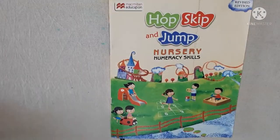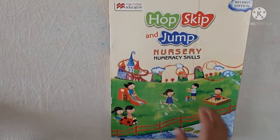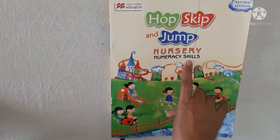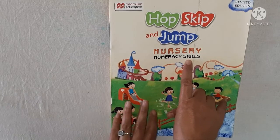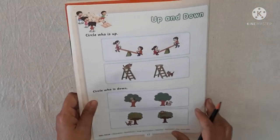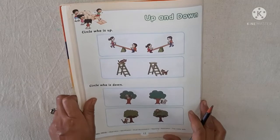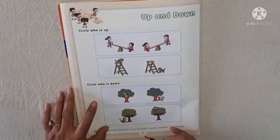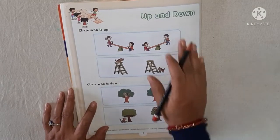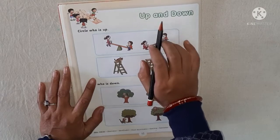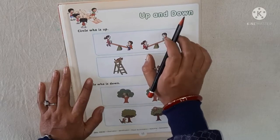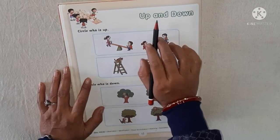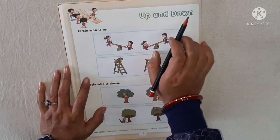Now do the exercise in your book — numeracy skills. Open page number 1212. Up and down. Up and down.